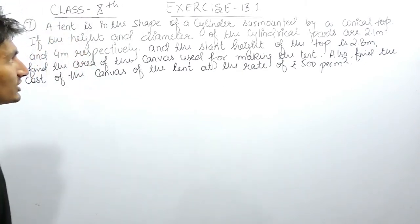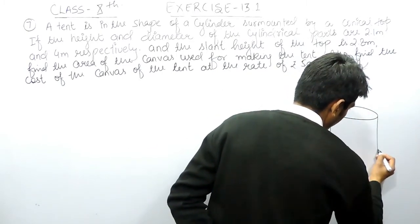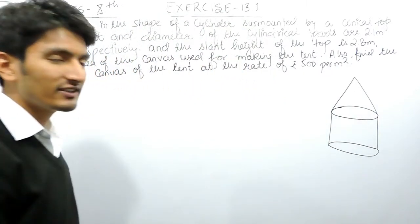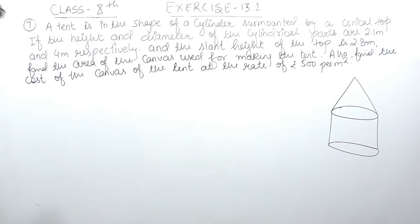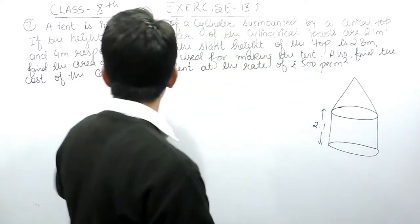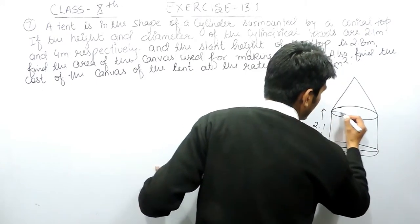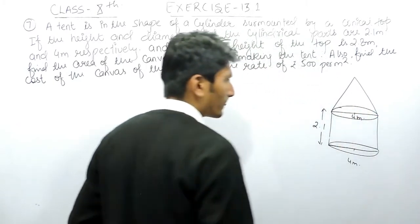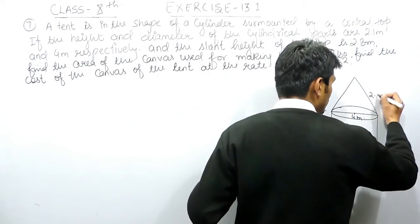A tent is in the shape of a cylinder, with a conical part mounted on top. The height of the cylinder is 2.1 meters and the diameter is 4 meters. Since the base of the cylinder and the cone are the same, the diameter of the cone is also 4 meters. The slant height of the cone is 2.8 meters.